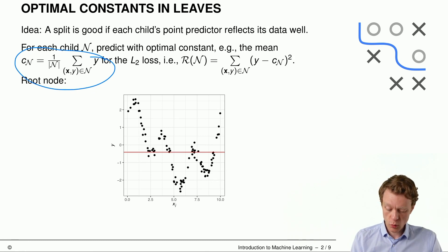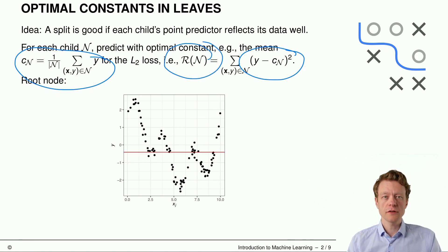If we choose the L2 loss, so y minus constant squared, and then we sum up those losses for getting the risk, then the optimal constant is the mean. We will not treat here the proof why this is the case. We do this in advanced risk minimization, but for now you can just accept or perhaps you already know that the mean is a pretty good predictor if we choose the L2 loss.